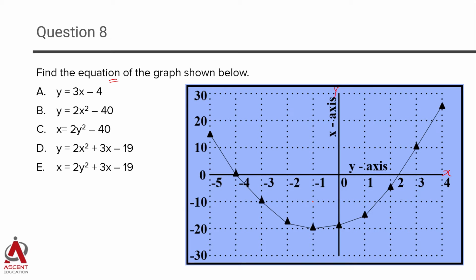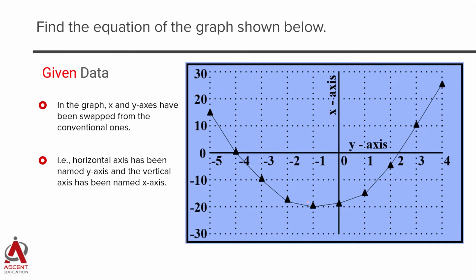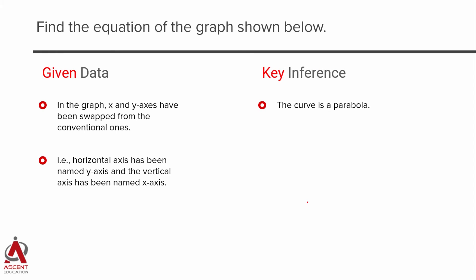What we are going to do is we will quickly jot down the given data and make some inferences based on that. The first one as I mentioned is the x and y axis have been swapped, so the horizontal axis for us is y and the vertical axis in this question is your x axis. Now, what we will do is we will jot down key inferences.